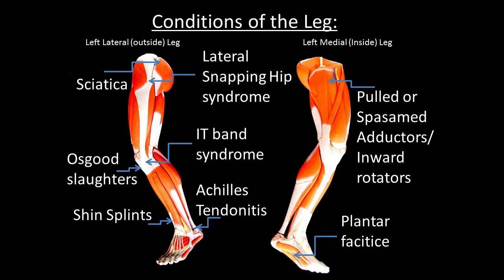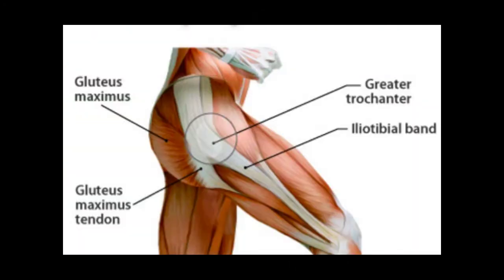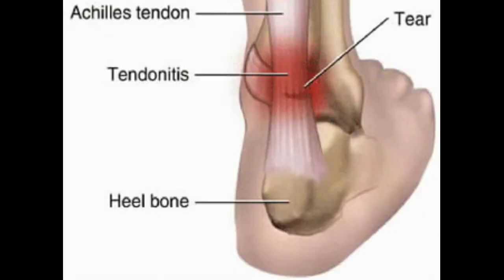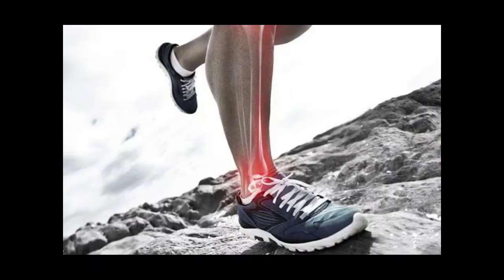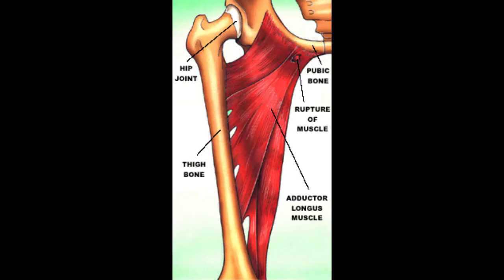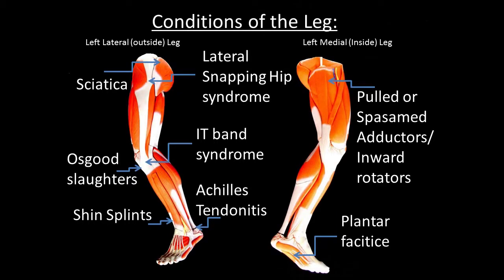There are several conditions of the leg, some of which we've covered in previous episodes, such as plantar fasciitis and Osgood-Schlatter's. Other conditions may include sciatica, lateral snapping hip syndrome, IT band syndrome, Achilles tendonitis, shin splints, pulled or spasmed adductors, or inward rotators. All of these have different and various causes, some are related, but most if not all are related to some aspect of the person's lifestyle, and can be avoided with awareness and proper conditioning.